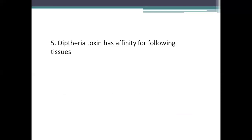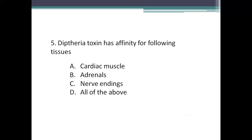Next question: diphtheria toxin has affinity for which following tissues? Option A: cardiac muscle. Option B: adrenals. Option C: nerve endings. Option D: all of the above. The right answer is Option D, all of the above. Corynebacterium diphtheriae produces diphtheria toxin, which enters the bloodstream and affects cardiac muscles, adrenals, and nerve endings. It causes diphtheria myocarditis leading to heart failure and death, polyneuropathy, post-diphtheritic paralysis of palatine and ciliary muscles, and degenerative changes in adrenals, kidney, and liver.